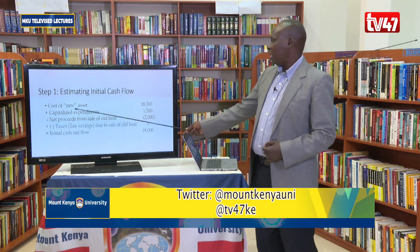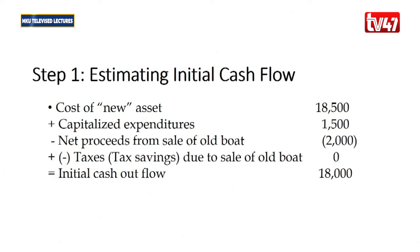The old boat was originally bought for $9,000 including capitalized expenditures, using accelerated depreciation of 33.33%, 44.45%, 14.81%, and 7.41%, with a tax rate of 40%. For the initial cash outflow: the cost of the new asset is $18,500, plus capitalized shipping costs of $1,500, minus the $2,000 net proceeds from the sale of the old boat, with no tax savings. Therefore the initial cash outflow is $18,000.